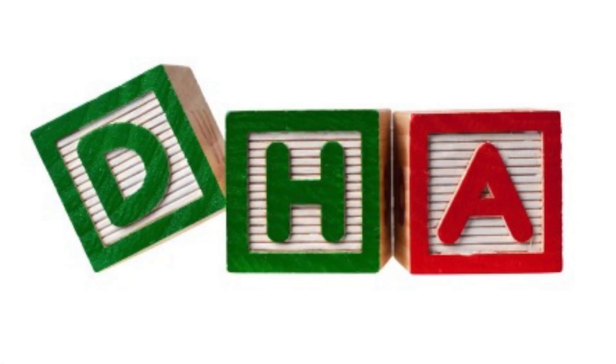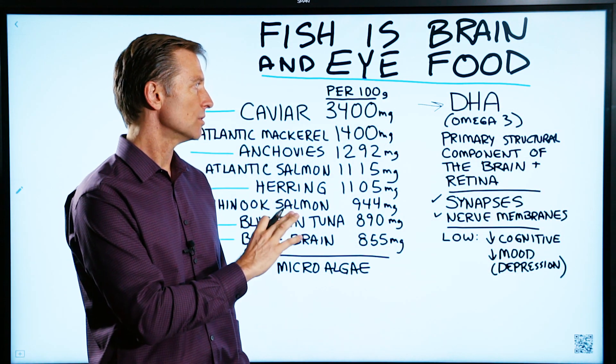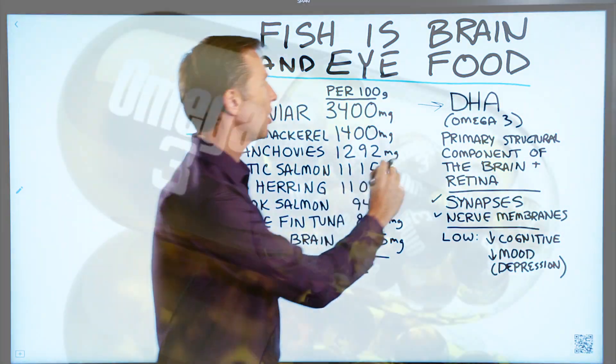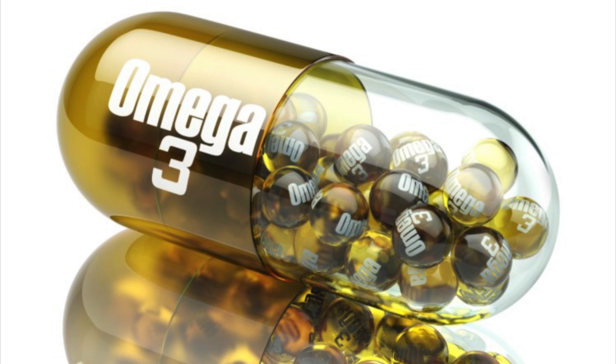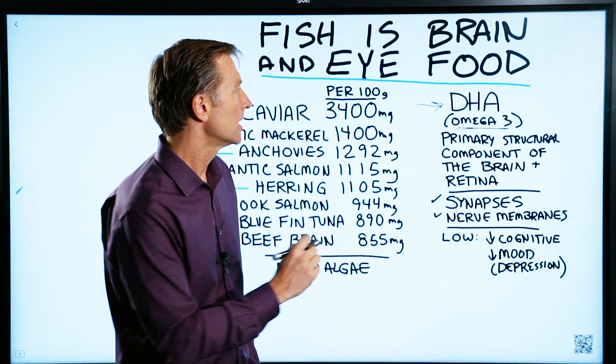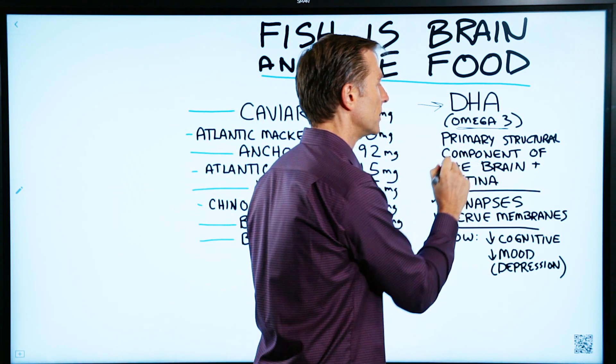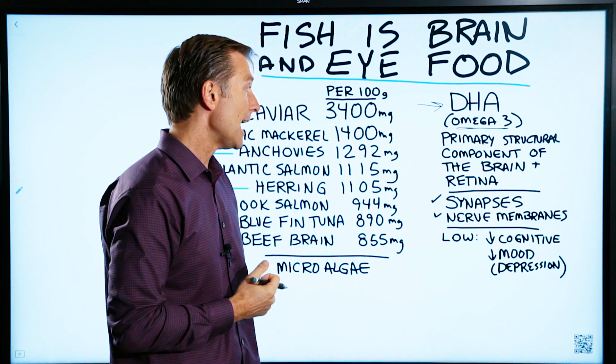Because of DHA. Now, not all fish have high levels of DHA. I will explain which ones do, but DHA is an omega-3 fatty acid, and it's used as a primary structural component of the brain and the retina.